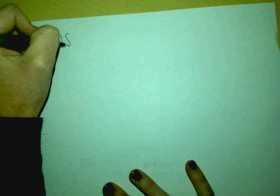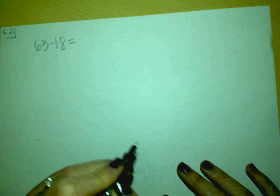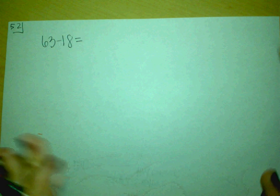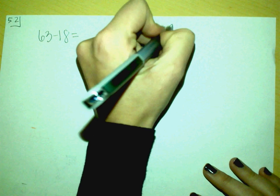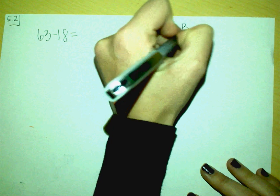Today's lesson was 5.2 and I'm going to use the example 63 minus 18. I taught the kids that there are two steps to solving a problem like this. Step one is to break apart your number.